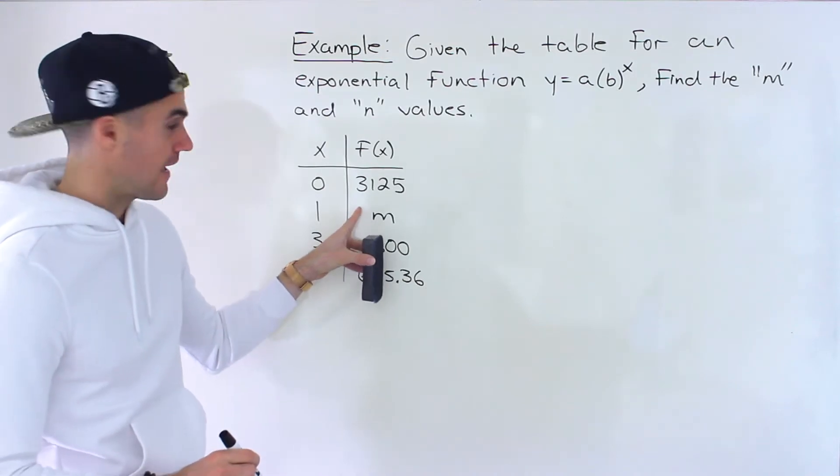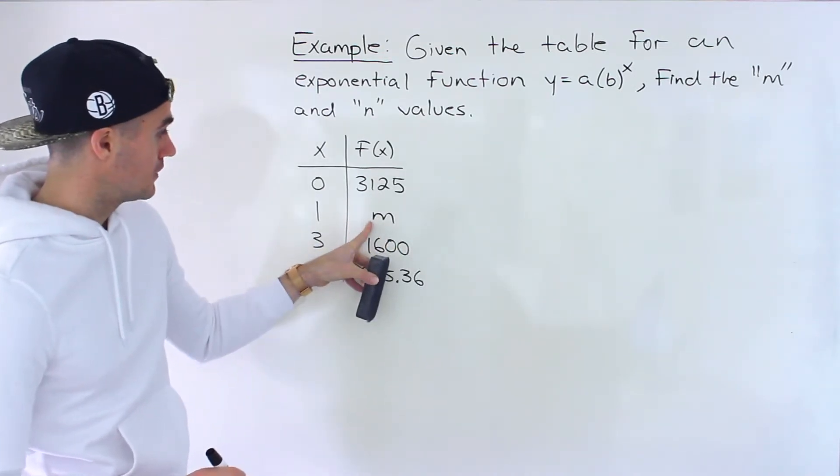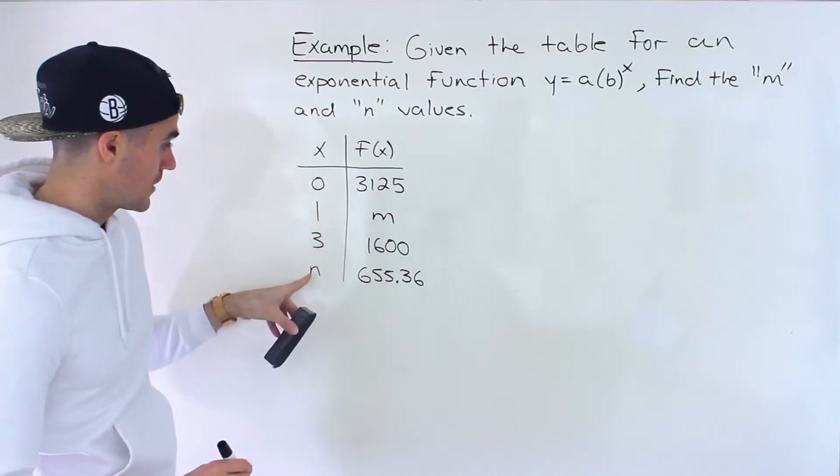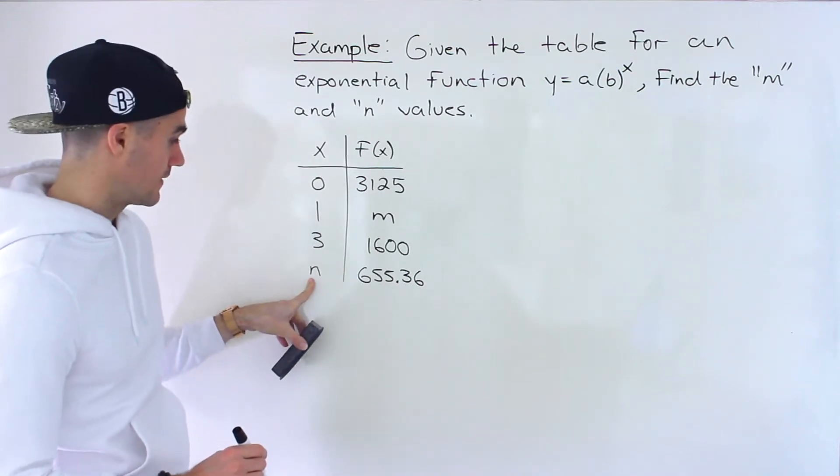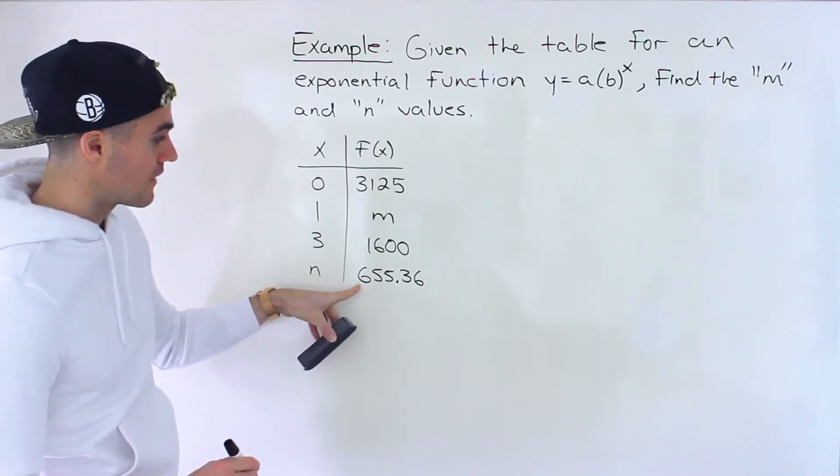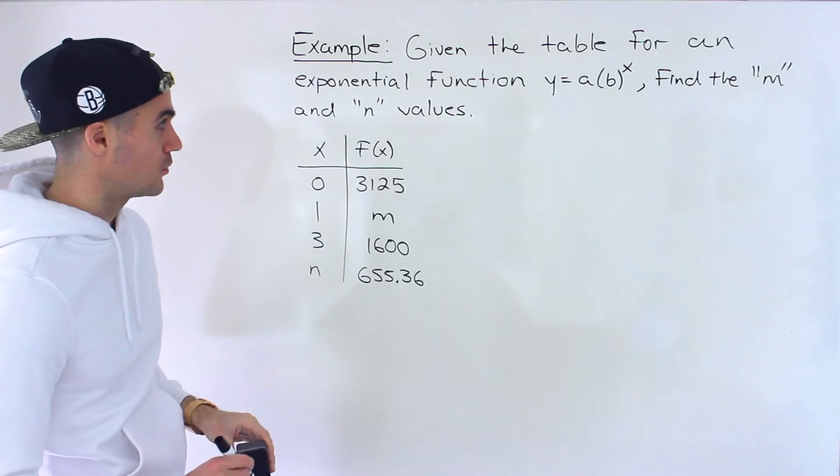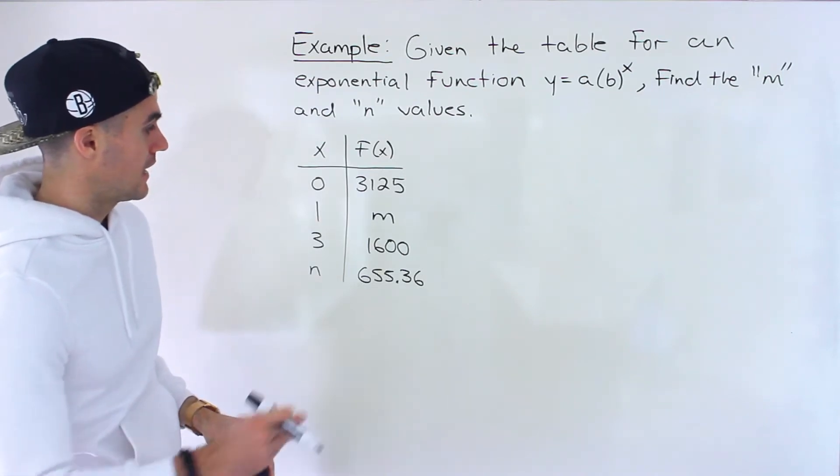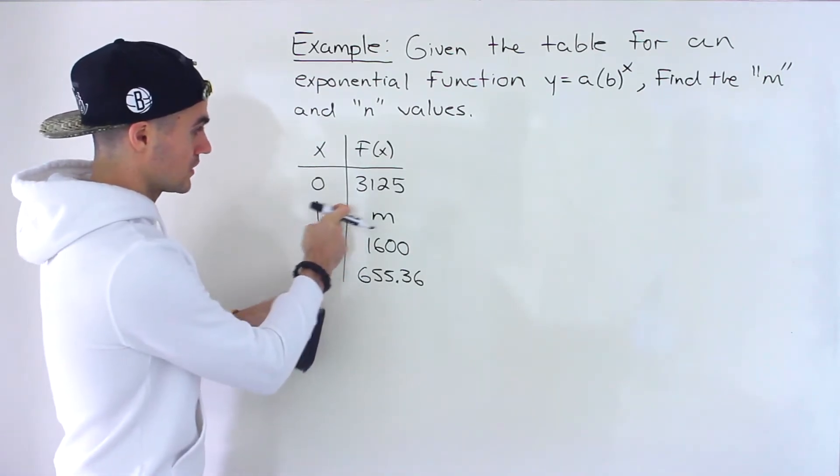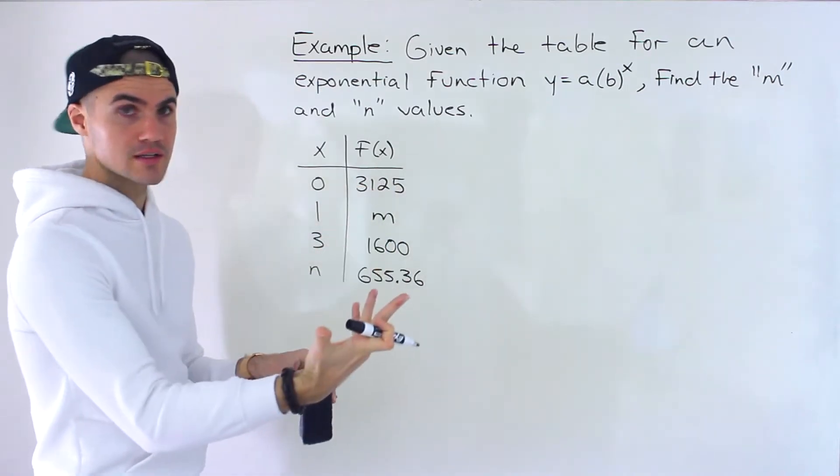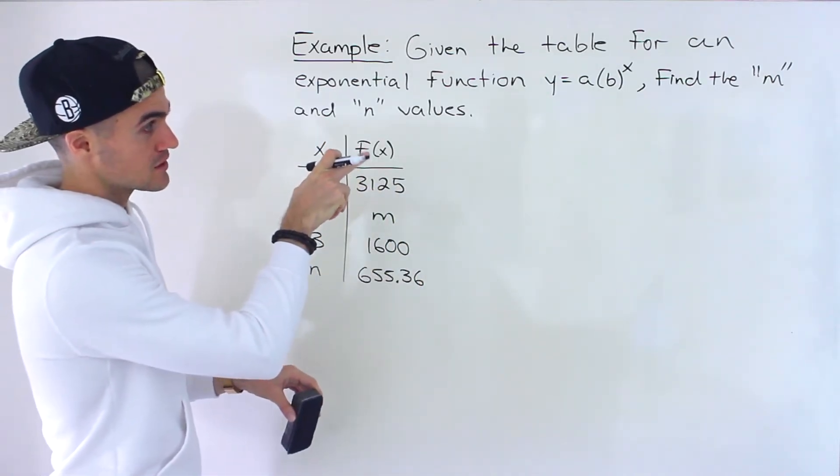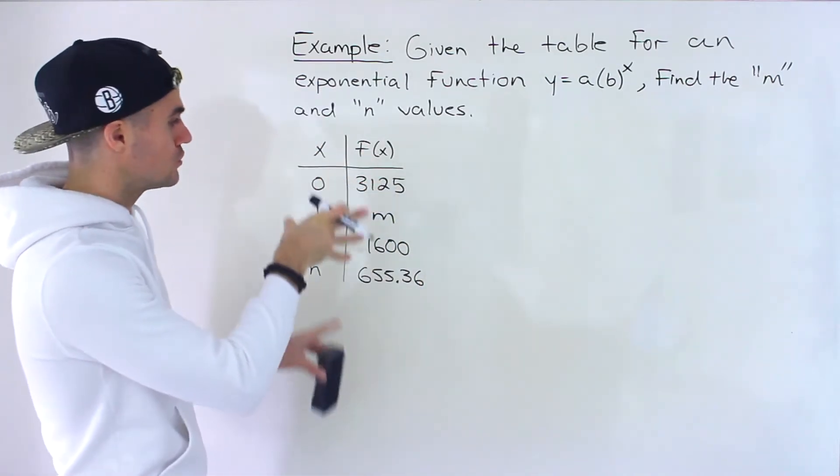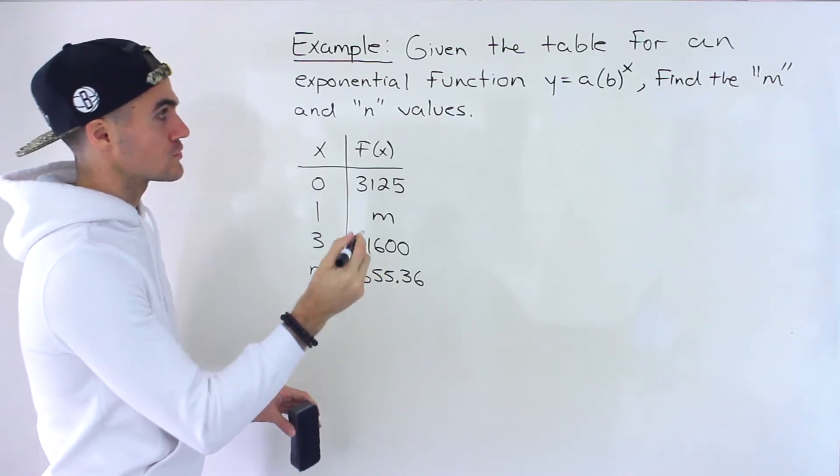So notice we have an unknown here, m, the y coordinate when x is 1. And then we have this unknown value n, the x coordinate when the y value is 655.36. And notice in addition to those two coordinates, we're given two full coordinates. And we have two unknowns, a and b. So we can use those two coordinates to solve for those two unknowns.